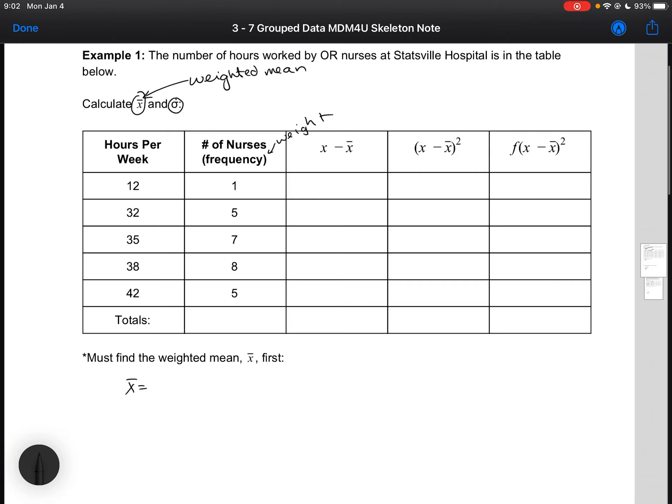In order to find our weighted mean, we know that this is the sum of our weight times our x values divided by the sum of our weights. Or, in this case, we could also write it like this. Our frequency times x over the sum of our frequencies.